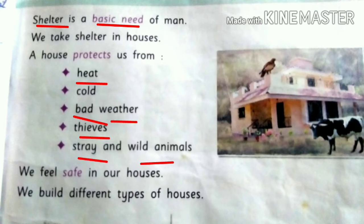Shelter is a basic need of man. We take shelter in houses — हम अपने घरों में रहते हैं. A house protects us from heat, cold, bad weather, thieves, stray and wild animals. We feel safe in our houses. हमारे घर हमें गर्मी से, ठंडी से, खराब मौसम से, चोरों से, आवारा और जंगली जानवारों से बचाते हैं। घरों में हम अपने आपको सुरक्षित महसूस करते हैं।